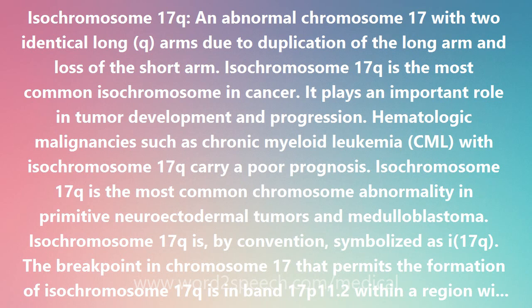Isochromosome 17Q is, by convention, symbolized as I-17Q. The breakpoint in chromosome 17 that permits the formation of Isochromosome 17Q is in band 17P11.2, within a region with large, palindromic, low-copy repeat sequences. This complex genomic architecture suggests that Isochromosome 17Q arises not as a random event, but rather due to a susceptibility in the genomic structure.